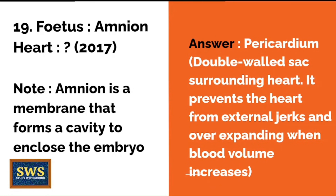Question 18 from the 2017 paper: Fetus is to amnion as heart is to what? Note that the fetus/amnion part is not in the reduced syllabus, but it's an interesting question. Amnion is a membrane that forms a cavity to enclose the embryo. The correct answer is pericardium — a double-walled sac surrounding the heart. The function of the pericardium is to prevent the heart from external jerks and over-expanding when blood volume increases.